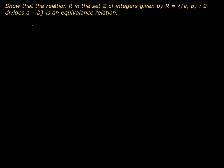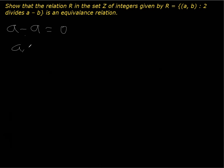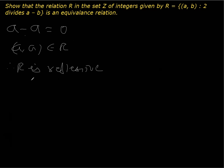In order to prove this as an equivalence relation, I need to first prove reflexivity. I replace b with a, so we get a minus a, and we know that a minus a is zero. We also know that 2 divides zero, because 2 multiplied by 0 is 0. So 2 divides zero, which means (a, a) belongs to R. Hence R is reflexive.